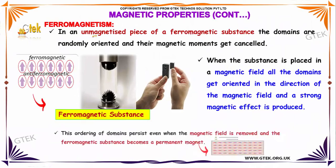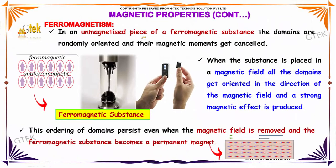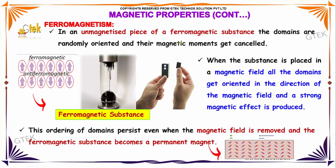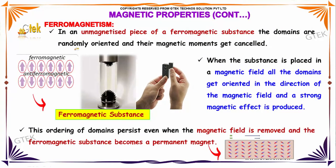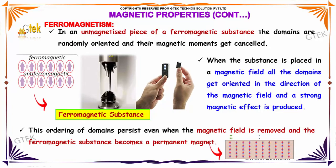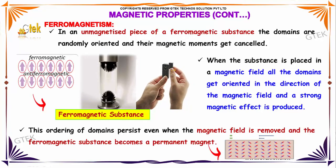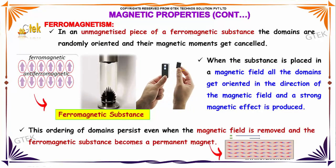In an unmagnetized piece of a ferromagnetic substance, the domains are randomly oriented, and their magnetic moments get cancelled.